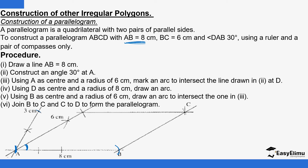In one of our previous videos we covered construction of 30 degrees — you construct 60 degrees first, then bisect it to get 30 degrees. If you missed that, you can check the previous videos. So here I've measured 30 degrees and drawn the line. This length AD is six centimeters, so using A as the center and a radius of six centimeters, you draw an arc to cut the line at that point, which gives us point D.